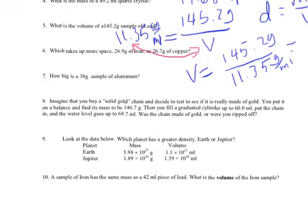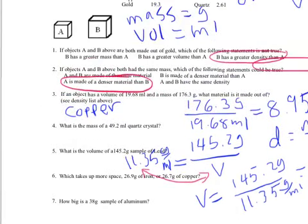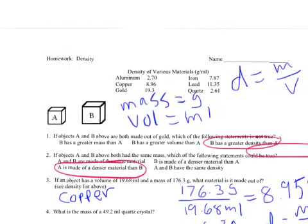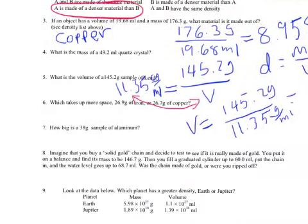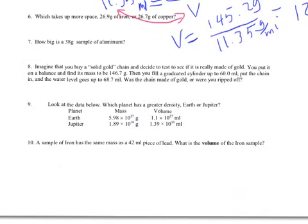Now we come down here to number eight. The question is, was the chain made of gold or were you ripped off? In other words, we want to find its density because what we can tell is this, that the density of gold is 19.3 grams per milliliter. So if I use this equation, solve it for density by dividing mass by volume, what I'll find then is whether or not it's actually made out of gold.